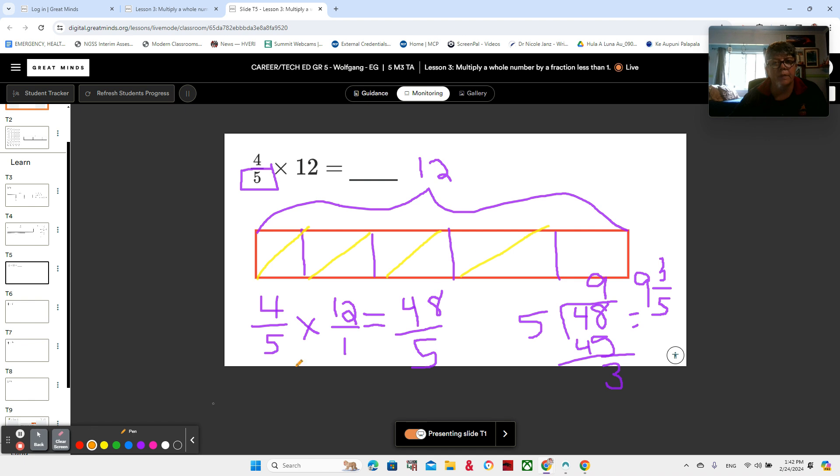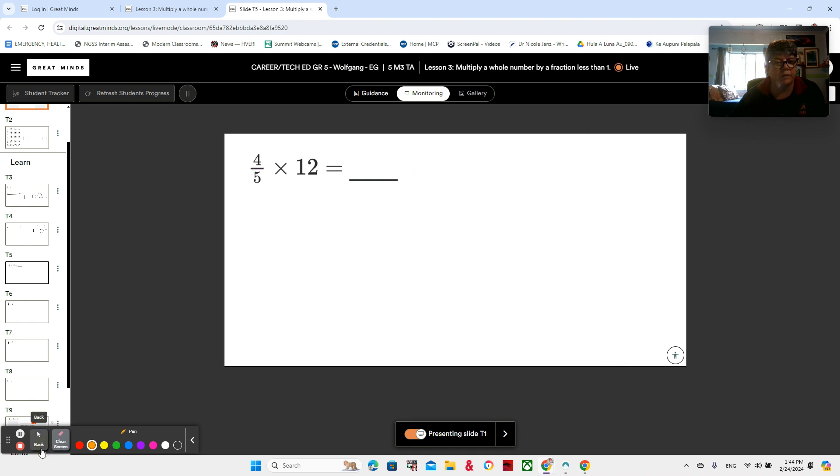All right. Now let's think about doing it the other way. So we want to think about one fifth times four. That would be our four fifths times 12. Now we can multiply those in any order that we want. But since we broke these apart, let's do four times 12. Four times 12 is 48. 48 times one fifth would be 48 fifths. And then we still need to divide to change it from an improper fraction to a mixed number of nine and three fifths. All right. So two different ways to look at it. Let's try one more. Make sure that you're taking notes. If you need to pause me, do that.